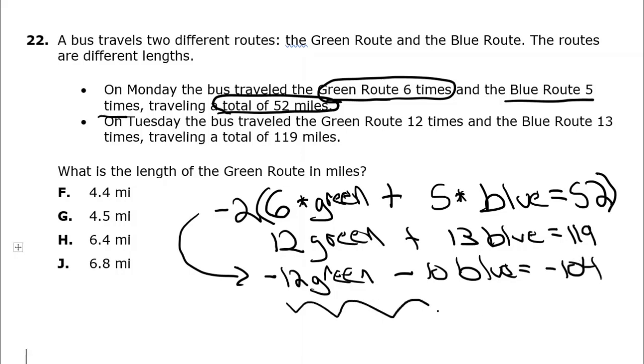Now we can combine our two equations. So 12 minus 12, those cancel. 13 minus 10 gives us 3 blue equals negative 104 plus 119 is going to give us 15. So if we divide both sides by 3, our blue is going to be equal to 5.